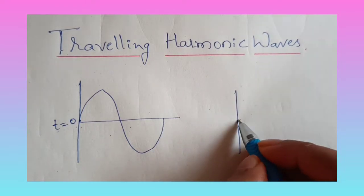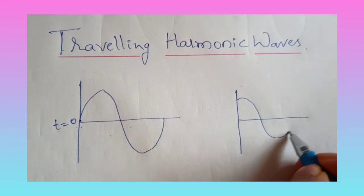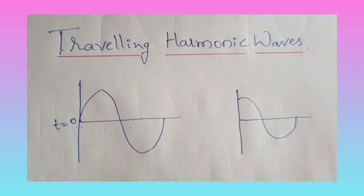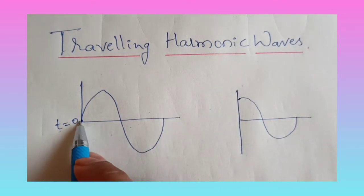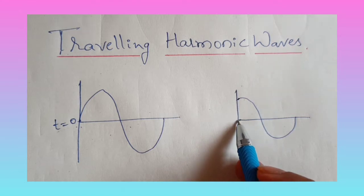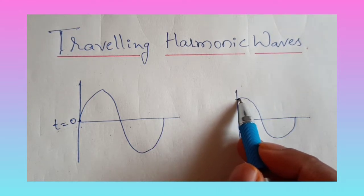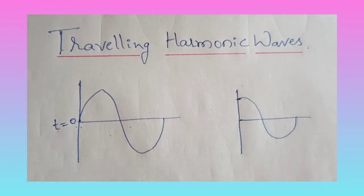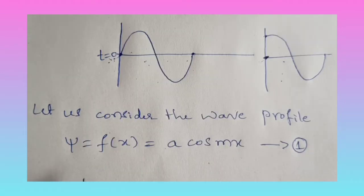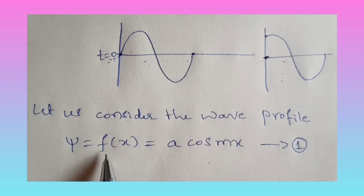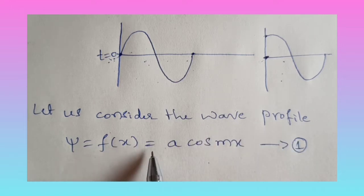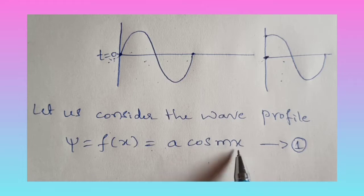If the curve is like this then it is a cosine curve. That means here the curve starts from the equilibrium position, and here the curve starts from the maximum amplitude position. For the basic equation, let us consider the wave profile: psi is equal to f of x, equals to A cos(mx). Call this equation number one.